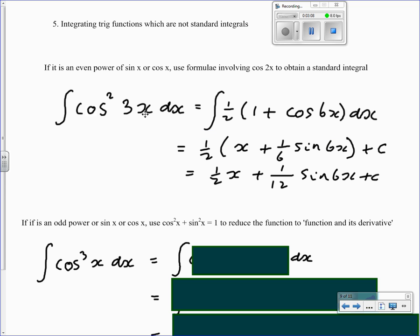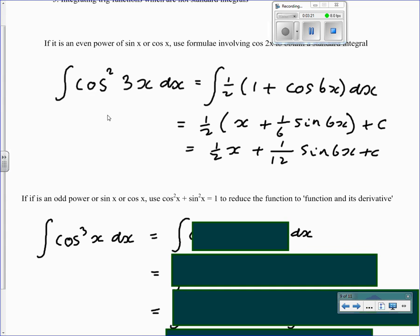Cos squared theta can be written as a half of 1 plus cos 2 theta. In this example we've got theta is 3x, so by substituting into the identity we get an expression which we can integrate.